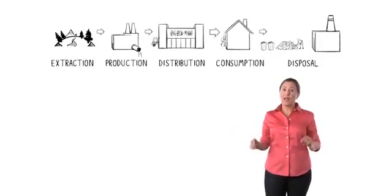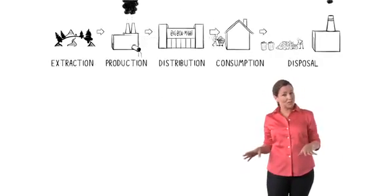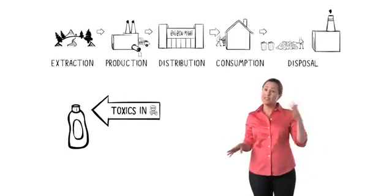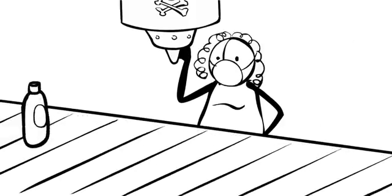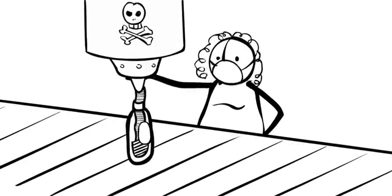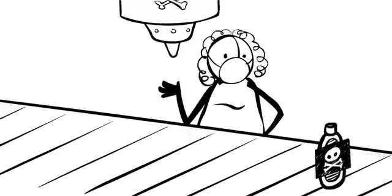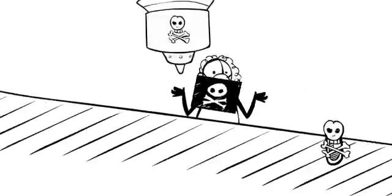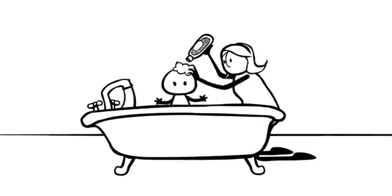To find out the answers, we have to go back to one of the key features of our materials economy: toxics in, toxics out. If, at the factory, you pour toxic chemicals into a product like baby shampoo, you're going to wind up with toxic baby shampoo. And toxics in workers, communities, and, duh, babies.